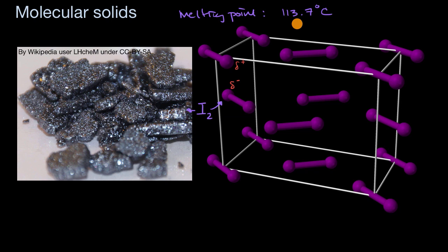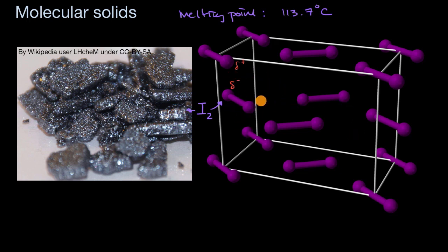How good are molecular solids as conductors of electricity? In order to conduct electricity, charge needs to move through the solid. Unlike metallic solids, you don't have a sea of electrons that can move freely. So molecular solids tend to be poor conductors of electricity.